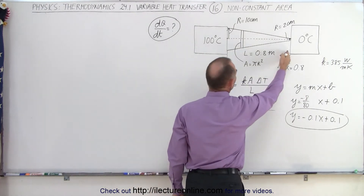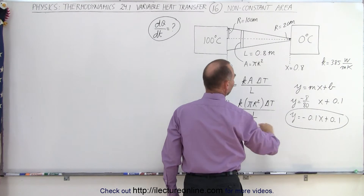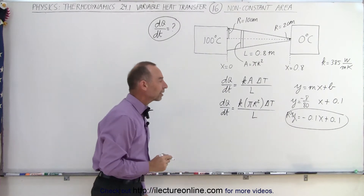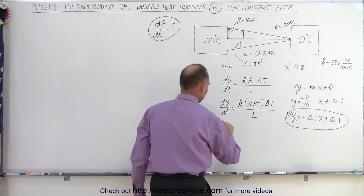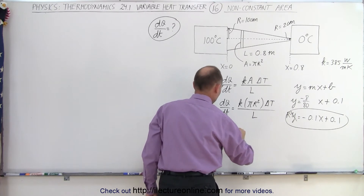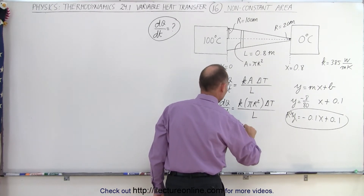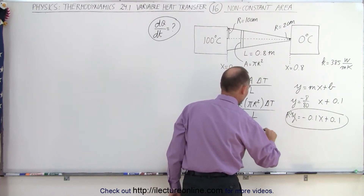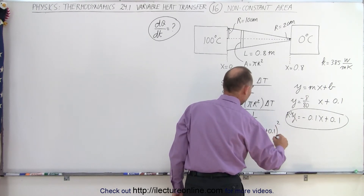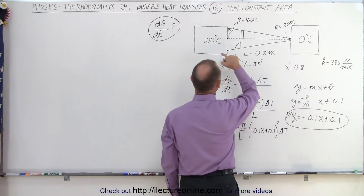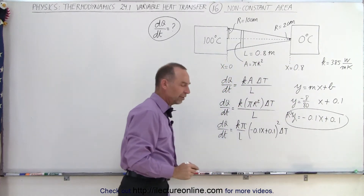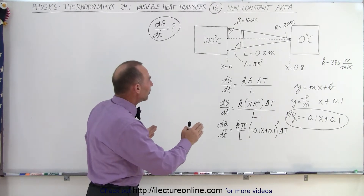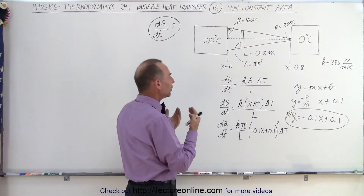We're going to integrate from x equals 0 to x equals 0.8, and the radius depends on position. We replace r with (−0.1x + 0.1), so dQ/dt equals K times π over L times the quantity (−0.1x + 0.1) squared times delta T, where delta T is 100 degrees. We need to set up a differential equation and integrate from x equals 0 to x equals 0.8.